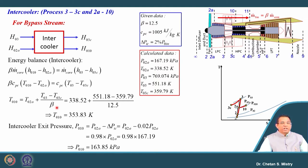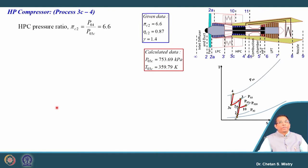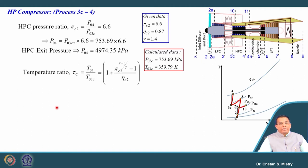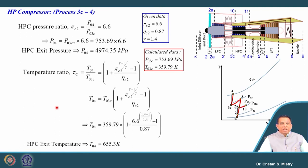For the HP compressor, pressure ratio is 6.6. Since we know the entry pressure from the intercooler exit, the HP compressor exit pressure is 4974.35 kPa. Correlating temperature ratio with pressure ratio and efficiency, the HP compressor exit temperature is 655.3 K.